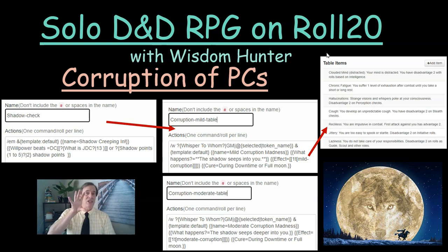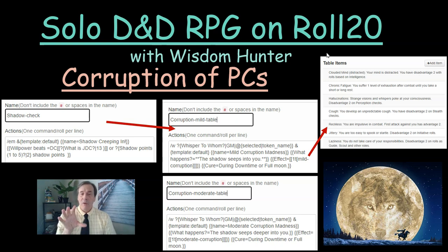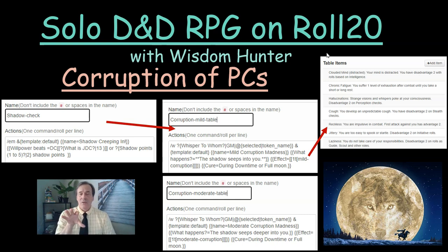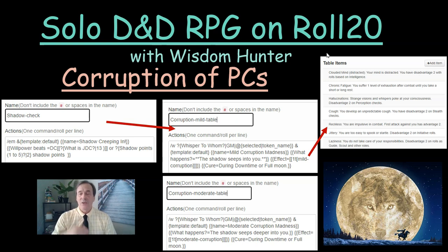The shadow points are determined by the severity of your contact with evil influences, which I call shadow in the games. Once you've accumulated enough shadow points without healing them, you start developing corruption levels. Corruption levels will actually change your personality and make you do certain crazy things. You'll see the macro for mild corruption there, and if you continue to be corrupted with more shadow points, you'll become moderately corrupted. This mild corruption table uses a rollable table, which you'll see part of over to the right.